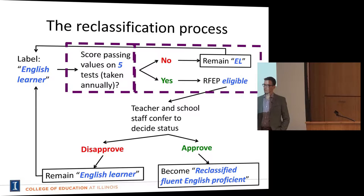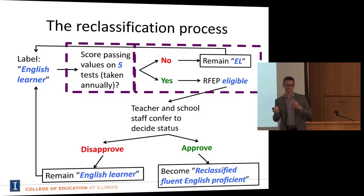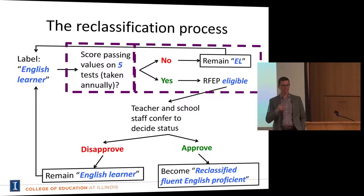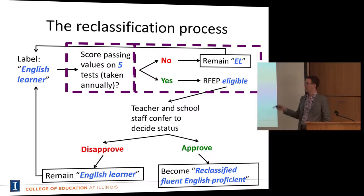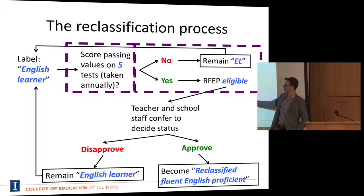A student has to pass all five tests simultaneously in a given year — it's not like passing a few one year and the others the next. If the student doesn't pass all of them, they remain an English learner and try again next year. If the student does pass all five thresholds, they become eligible for reclassification — but they're not automatically reclassified. At that point, the teacher and school staff confer to decide whether to reclassify.